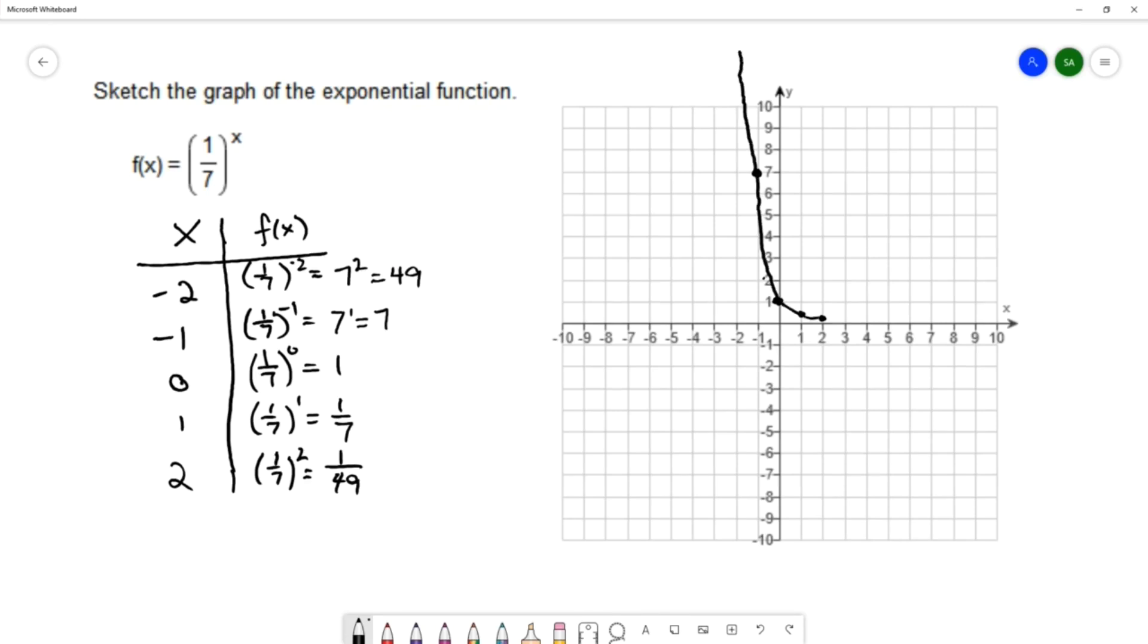On this other side where x is getting larger and larger, you can see our y values are getting smaller and smaller, getting closer to 0. This is going to get closer and closer to our x-axis, closer to a y value of 0.